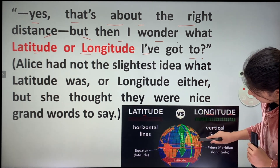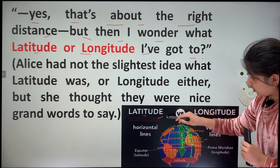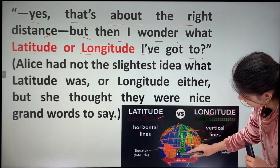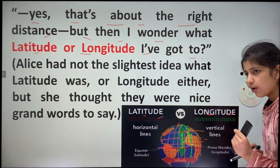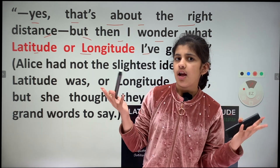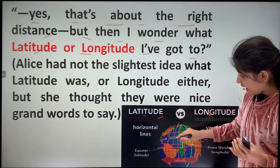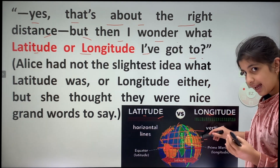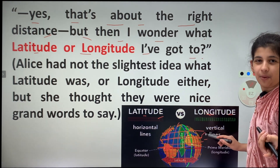These horizontal lines are called latitude, whereas these long standing lines are called longitude. Now here, you might get confused. You may say this is latitude and this is longitude. Don't you sometimes do that? I also do that sometimes but not now.